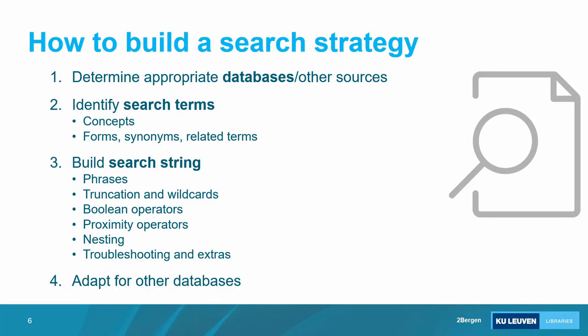In this slide, a little template you can always refer back to: first, think about appropriate databases and other sources to search. Then identify the search terms of your topics — concepts, other forms, synonyms, and related terms. Then build your search string specifically for the first database. Then take that first search strategy and adapt it to other databases. In this session, I won't explain the different databases in detail — we'll keep it at the level of the principle of how to build a search strategy.